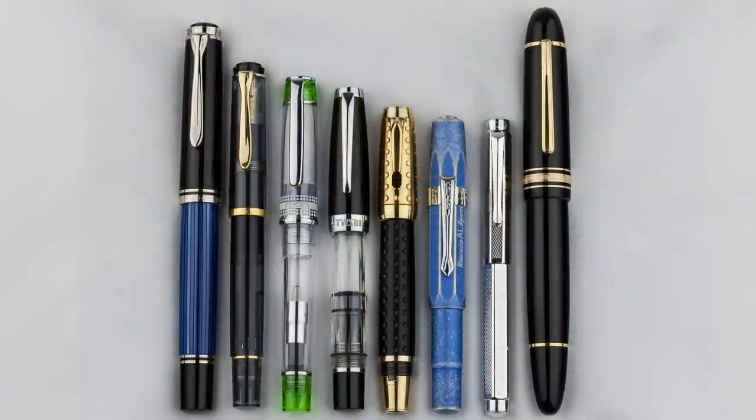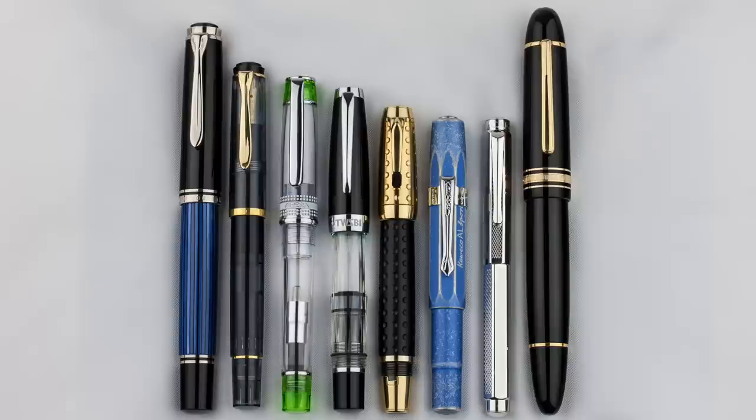Earlier, I described the Boheme as a pocket pen, and it is, but let's see how it stacks up to a few popular pens. From left to right, we have the Pelican M805, the Pelican M200, the Pilot Prera, the Twisby Mini, the Boheme, the Quaco Allsport, the Caran d'Ache Ecuador XS, and the Mont Blanc 149.